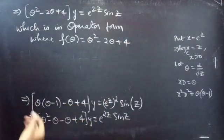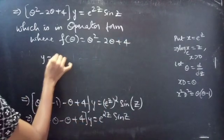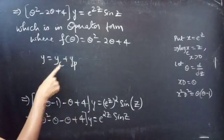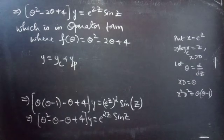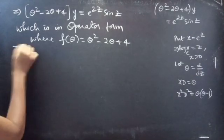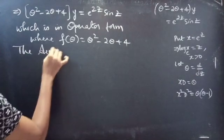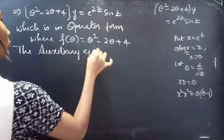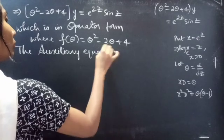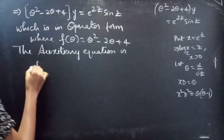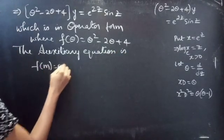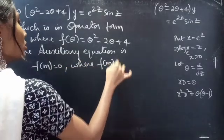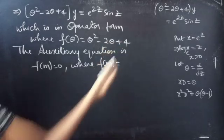We need to find the general solution y equals yc plus yp. The auxiliary equation is f(m) equals 0, where f(m) is obtained from f(theta) equals theta squared minus 2 theta plus 4 by replacing the differential operator by m, giving f(m) equals m squared minus 2m plus 4.